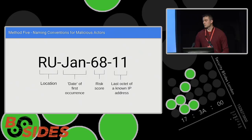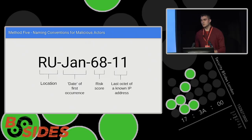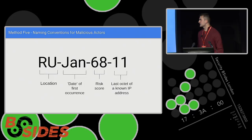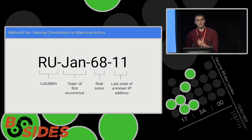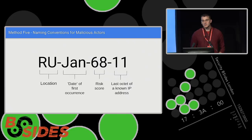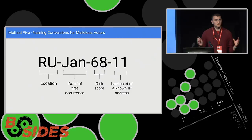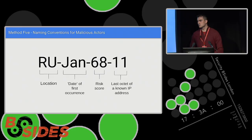Moving on to our final method — method five, though really it could be called method 0.5. Instead of looking at offender profiling or attack profiling, it looks at offender categorizing. It asks: can we create a sub-unique naming convention for our malicious actors that we can instantly glean information from? The way it does this is by breaking the name into four main areas: the location the malicious actor was first or most commonly seen; the date they were first seen; the risk score — the number between 0 and 100 derived earlier; and the last octet of the first-seen or most common IP address, giving it a sub-unique identifier. We could use IP addresses, hashes, or MAC addresses — this is just one example of a naming convention for our malicious actors.